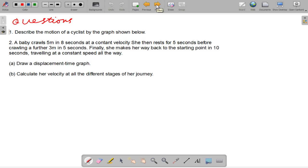Describe the motion of the cyclist by the graph shown below. So if you tell us what happens in parts A, B, C, and D, then that would be great. And the second question is: the baby crawls 5 meters in 8 seconds at a constant velocity. She then rests for 5 seconds before crawling a further 3 meters in 5 seconds.